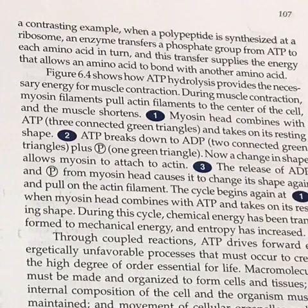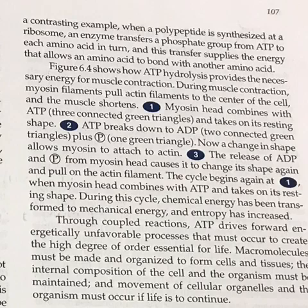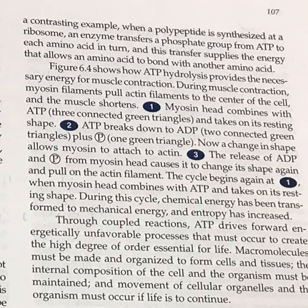Figure 6-4 shows how ATP hydrolysis provides the necessary energy for muscle contraction. During muscle contraction, myosin filaments pull actin filaments to the center of the cell, and the muscle shortens. The myosin head combines with ATP and takes on its resting shape. ATP breaks down to ADP plus a phosphate group. Now a change in shape allows myosin to attach to actin. The release of ADP and phosphate from the myosin head causes it to change shape again and pull on the actin filament. The cycle begins again when the myosin head combines with ATP and takes on its resting shape. During this cycle, chemical energy has been transformed to mechanical energy and entropy has increased.